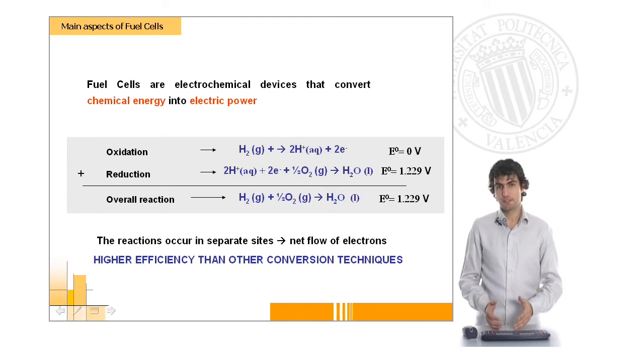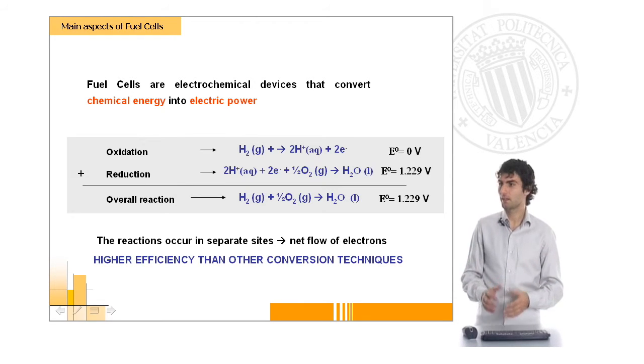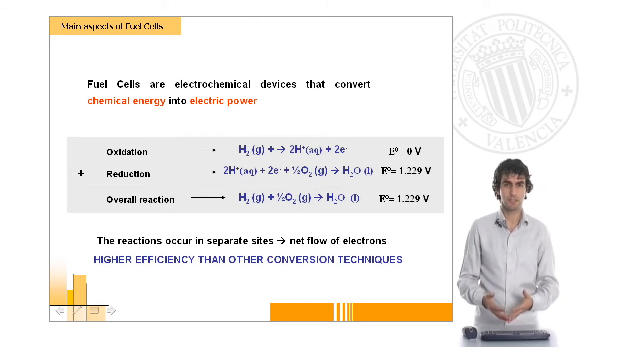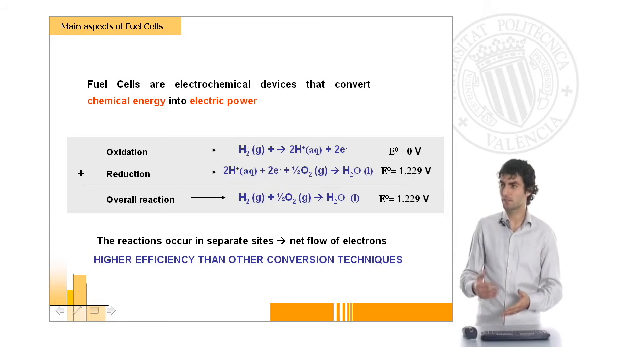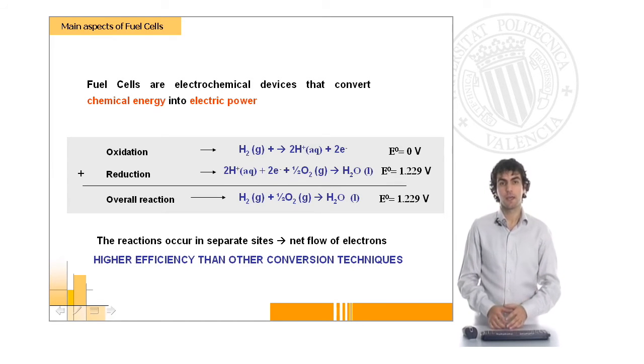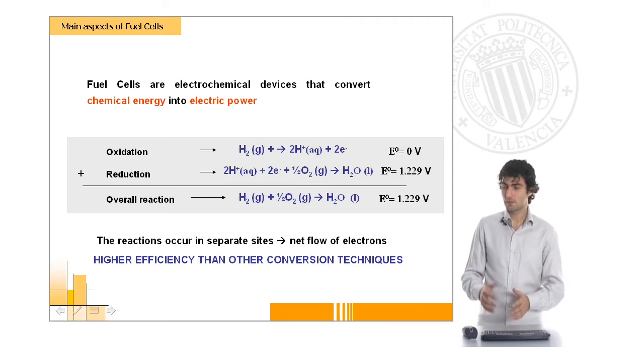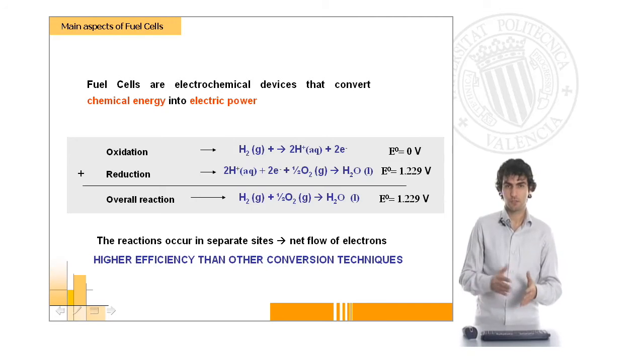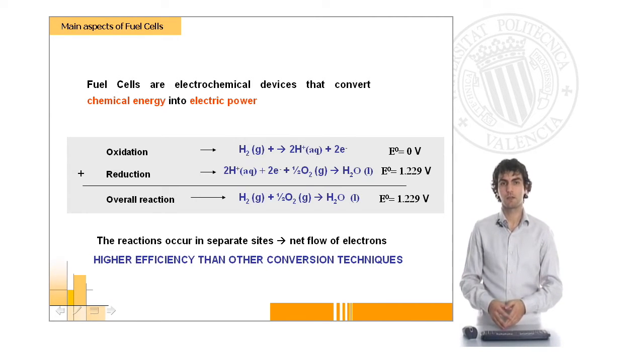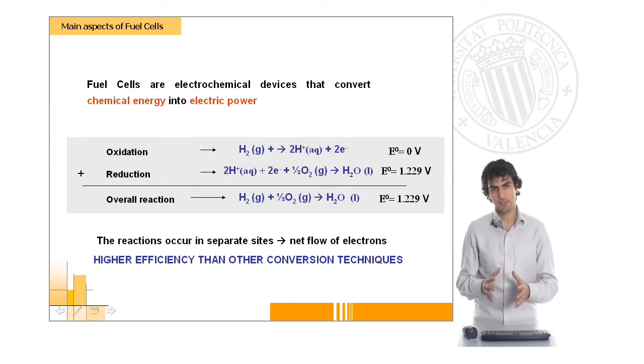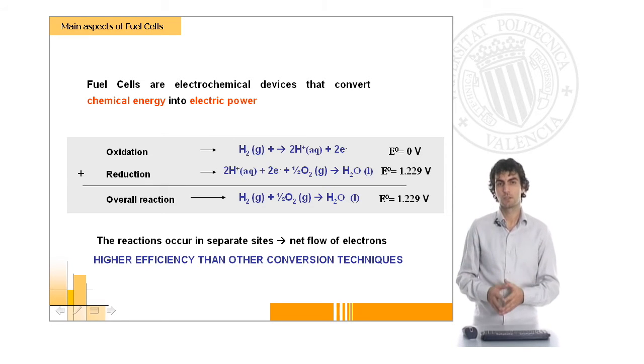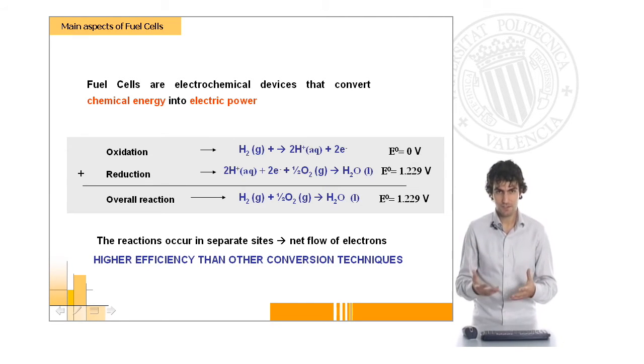Fuel cells are electrochemical devices that allow us to obtain electric energy directly from the oxidation and reduction of a fuel and an oxidant. We usually use oxygen in a cathodic reaction and we can use several different fuels for their oxidation. The most important thing about fuel cells is that because we have a direct conversion of energy, we're going to have very high efficiencies compared to other ways of converting energy.